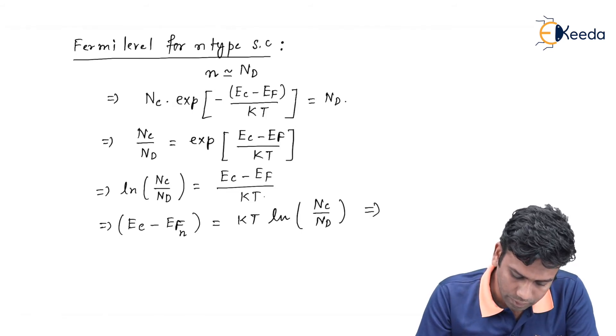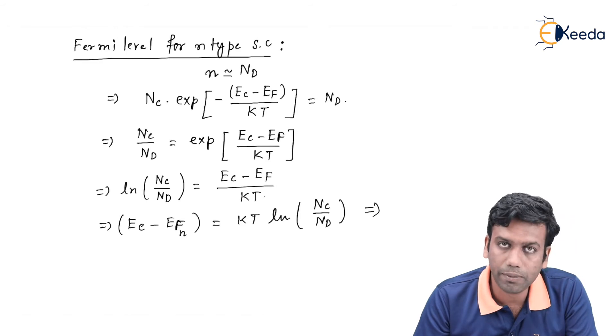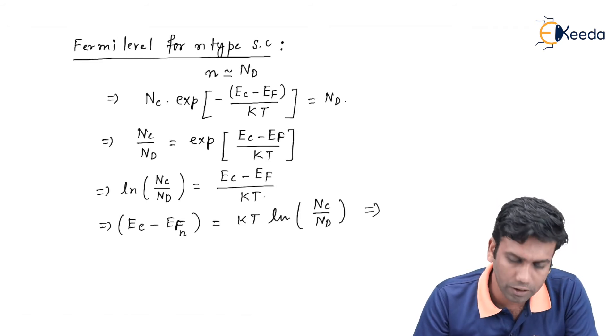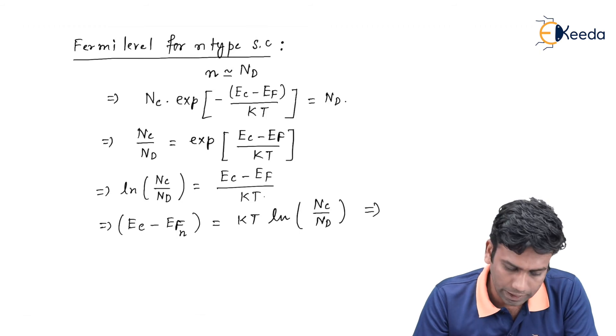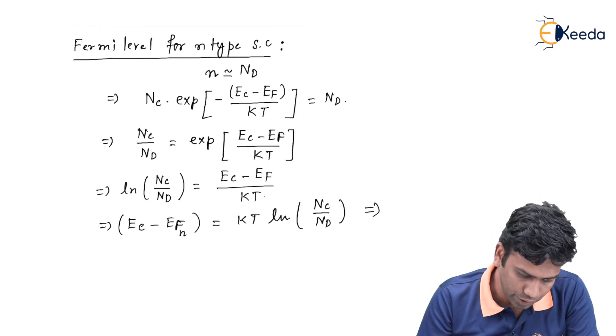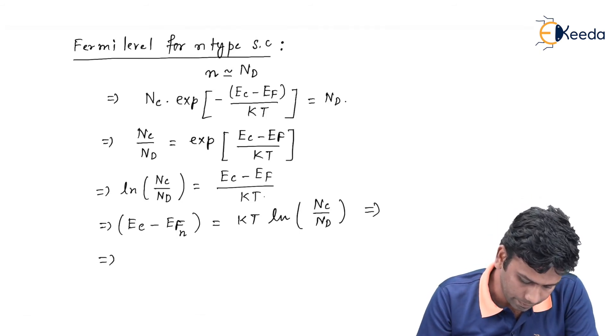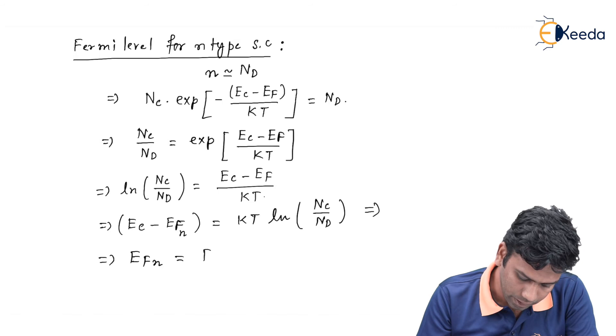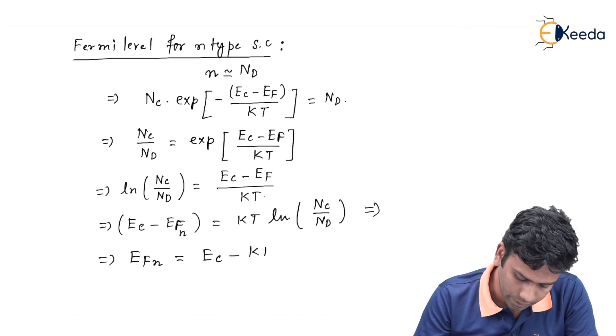This equation will give the Fermi level position with respect to the conduction band in the n-type semiconductor, which can be written as Efn will be Ec minus kT ln Nc divided by Nd.